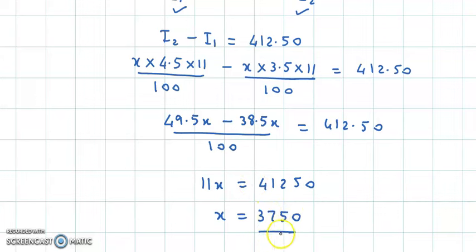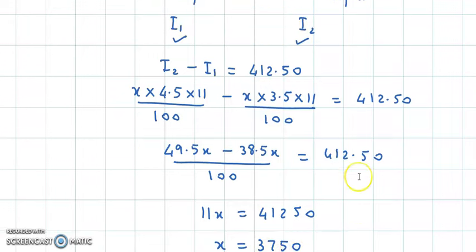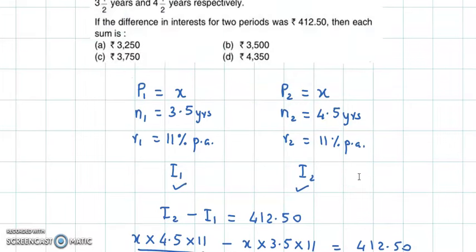So the sum lent is ₹3750. That is, the principal is ₹3750. Looking at the options, the correct answer is option C.